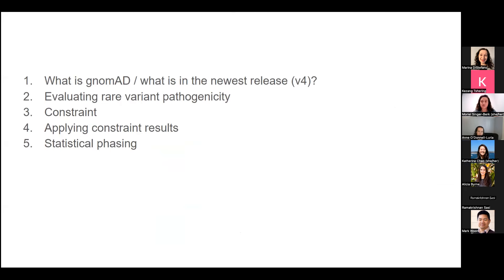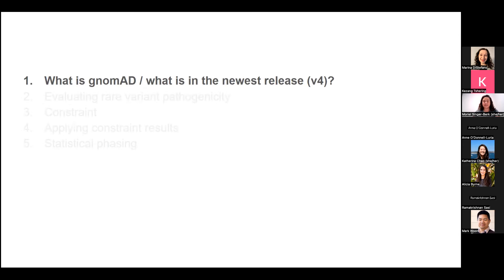This is just an overview of what we're going to cover. I'm going to start with a quick overview of what GnomAD is and what's in this newest release. Then I'll cover how we can use GnomAD to evaluate variant pathogenicity, especially rare variant pathogenicity, followed by features like constraint and applying those constraint results, as well as statistical phasing, assuming there's time.